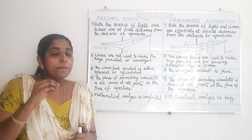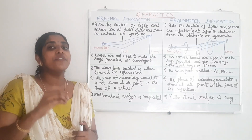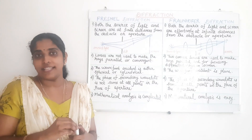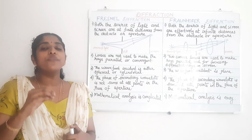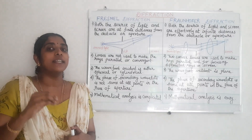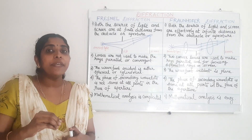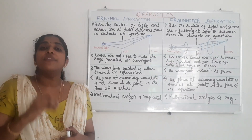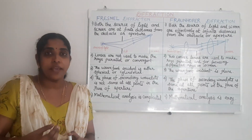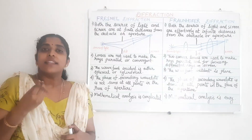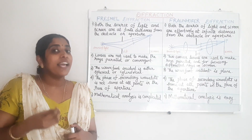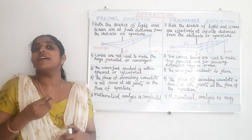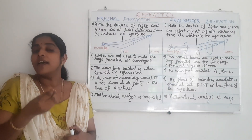One of the main conditions for diffraction to occur is that the size of the obstacle must be comparable with the wavelength of the waves. The wavelength of light is very small, so light waves cannot bend around the obstacle.